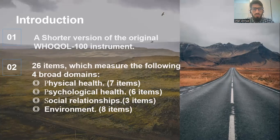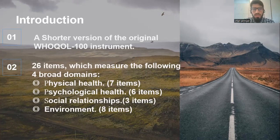The introduction about the WHO quality of life brief is, it is actually derived from the WHO long form 100, WHO quality of life 100. That's why they shorten it into 26 items, which measures the four following domains: physical health with 7 items, psychological health with 6 items, social relationships with 3 items, and environment with 8 items.